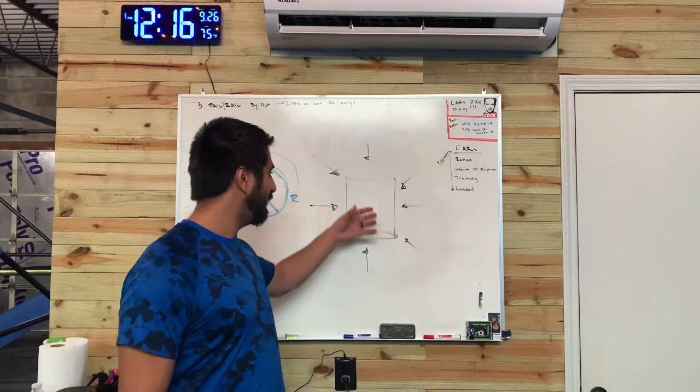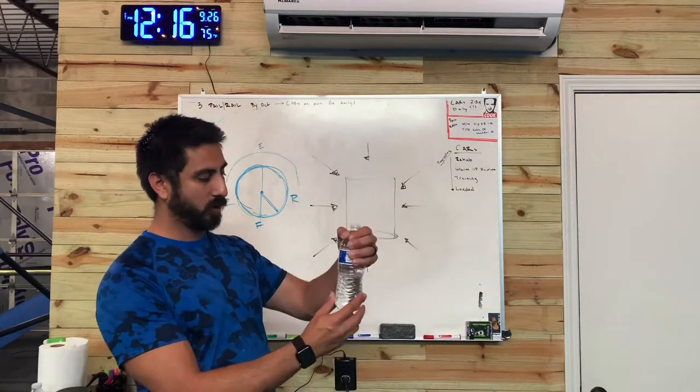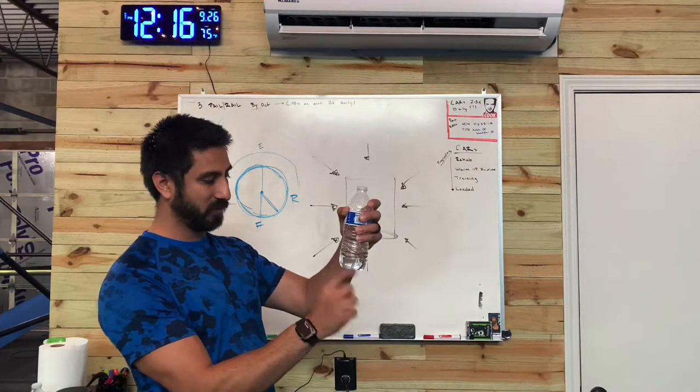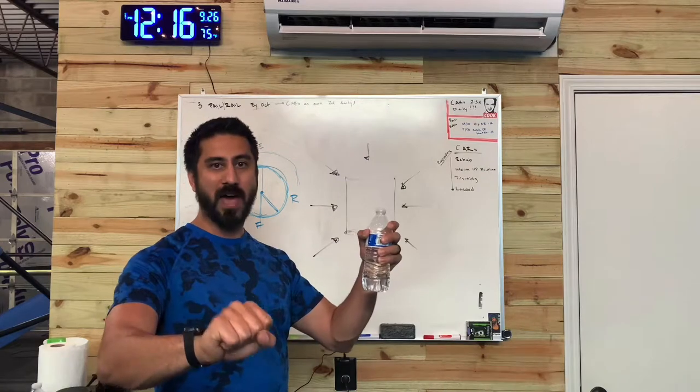So basically that leak is, if I had a leak in this can, I had a hole, and I went to squish it right here, boom, it's going to blow out on that end.